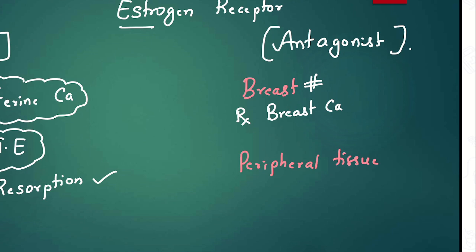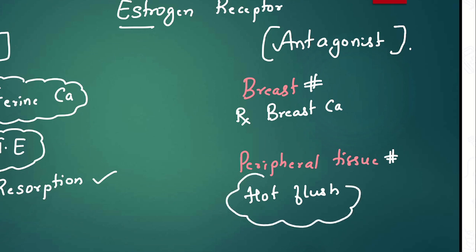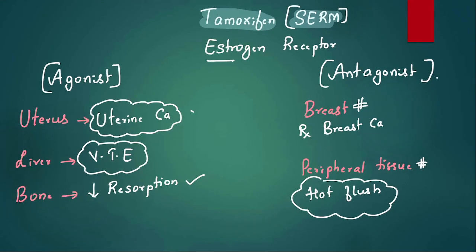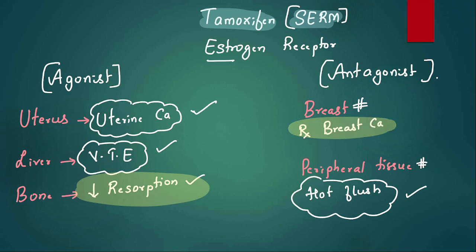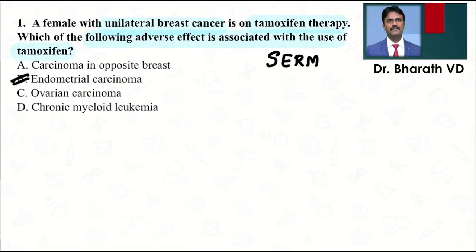Tamoxifen is used for both pre- and post-menopausal breast cancer. In peripheral tissue it also blocks estrogen action, causing hot flushes due to estrogen deficiency. So three adverse effects are: uterine cancer, venous thromboembolism, and hot flushes. Two advantages: decreases osteoporosis and treats breast cancer. It will not cause carcinoma in the opposite breast because it is an estrogen antagonist there.